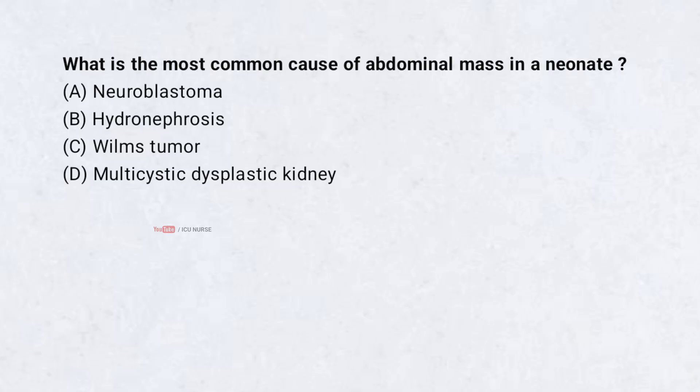What is the most common cause of abdominal mass in a neonate? A. Neuroblastoma. B. Hydronephrosis. C. Wilms tumour. D. Multicystic dysplastic kidney. Correct answer: B. Hydronephrosis.